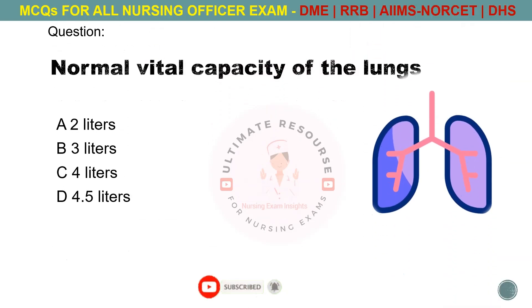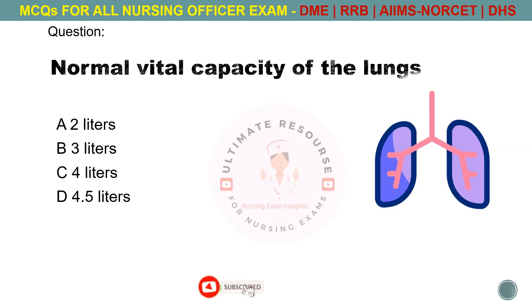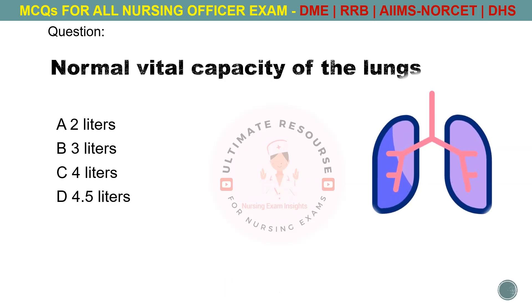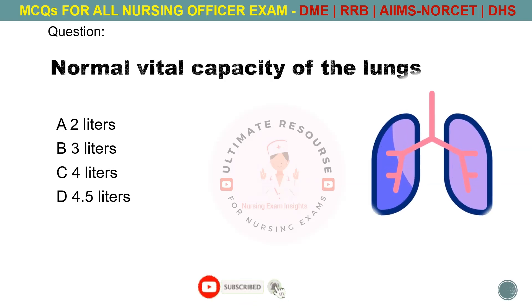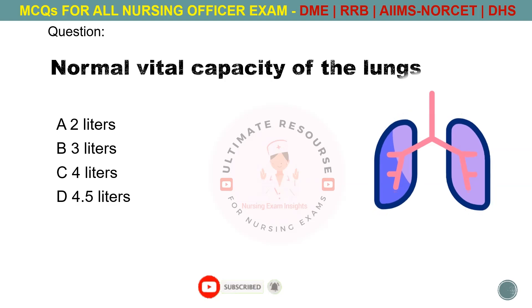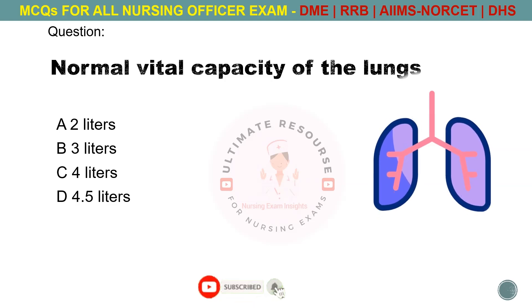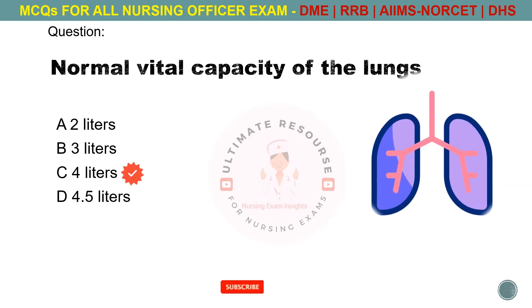Normal vital capacity of the lungs. Options are A. 2 litres, B. 3 litres, C. 4 litres, D. 4.5 litres. The answer is C. 4 litres.